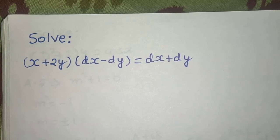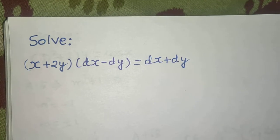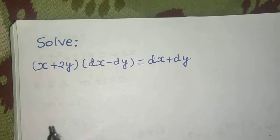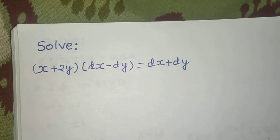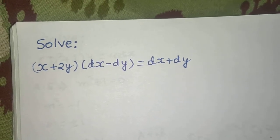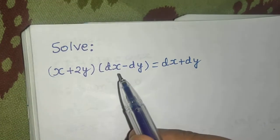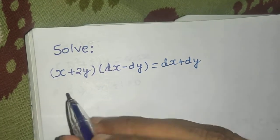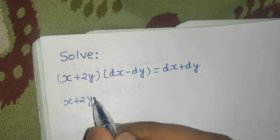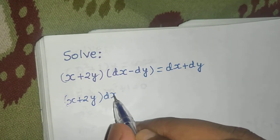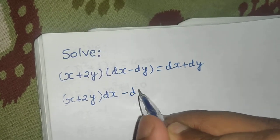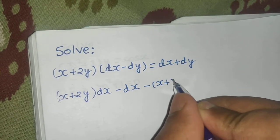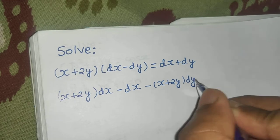Let's solve an important problem from differential equations. I will also discuss the concept used here. First, let's simplify and bring it to a recognizable form. If you multiply dx with this term and dy with this term, you get x plus 2y dx, minus dx, and minus of x plus 2y dy, minus dy equals zero.